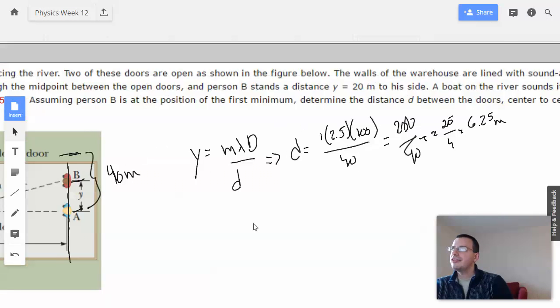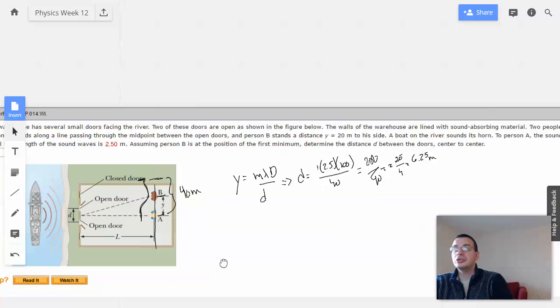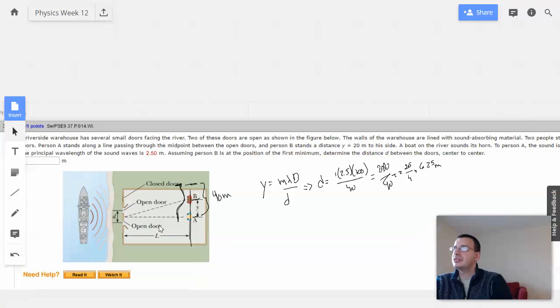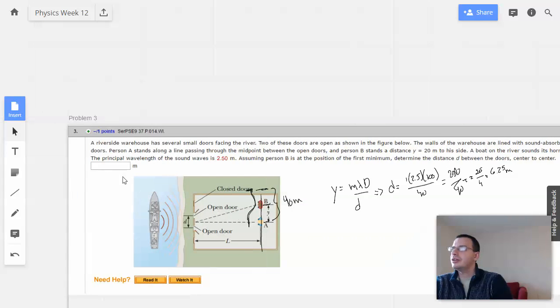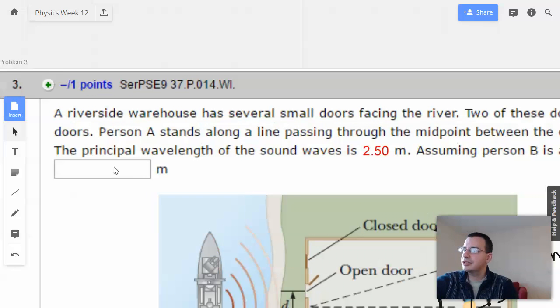So the distance between the two doors is 6.25 meters. That's all. Not hard. Success.